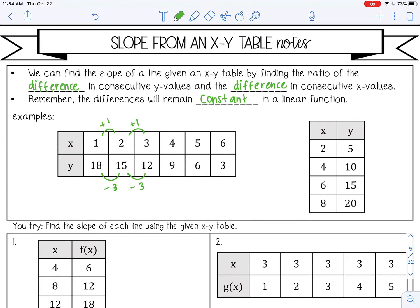So I found my differences in consecutive y values and x values. So now I want to find the ratio or the fraction between those. So I'm finding slope, m. And remember, slope is the change in y over the change in x. So the change in y is negative three, the change in x is positive one, and then that reduces to negative three. So my slope of that line is negative three.